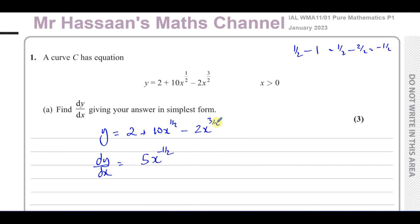And here, you're going to have minus 3 over 2 times 2. When you multiply 3 over 2 by 2, the 2's cancel. You're left with 3. x and 3 over 2, if you take away 1 from 3 over 2, that's 3 over 2 minus 2 over 2, which is a half. And that's it. That's the answer. Simple as that.